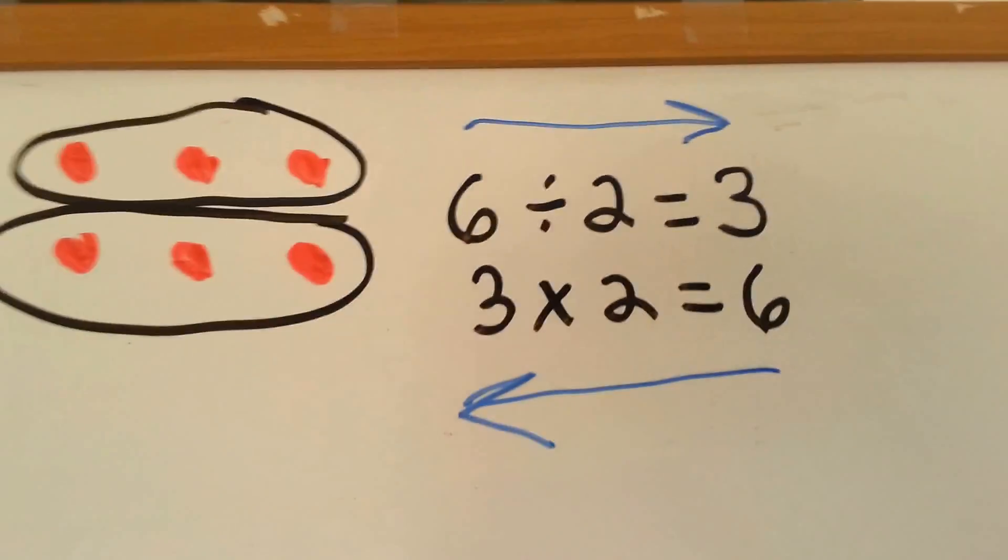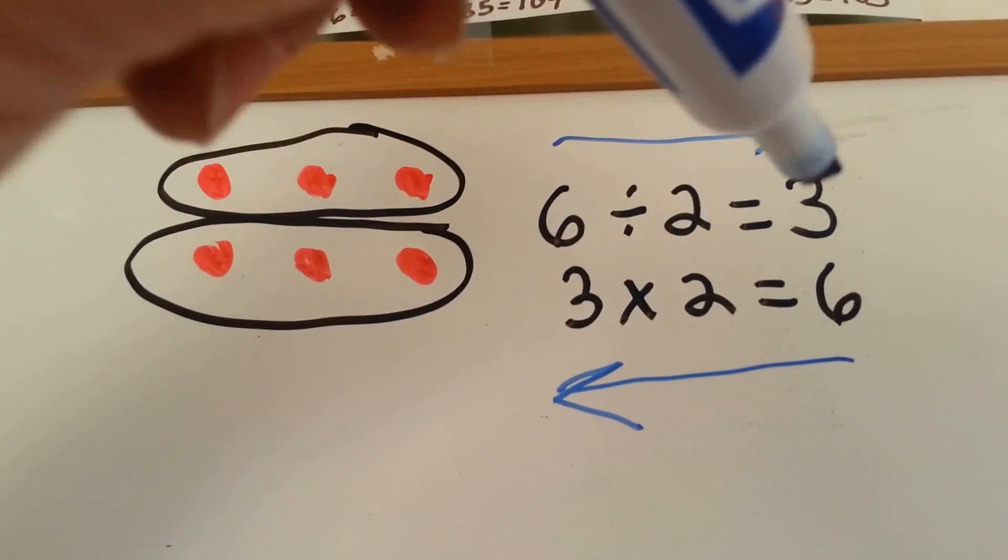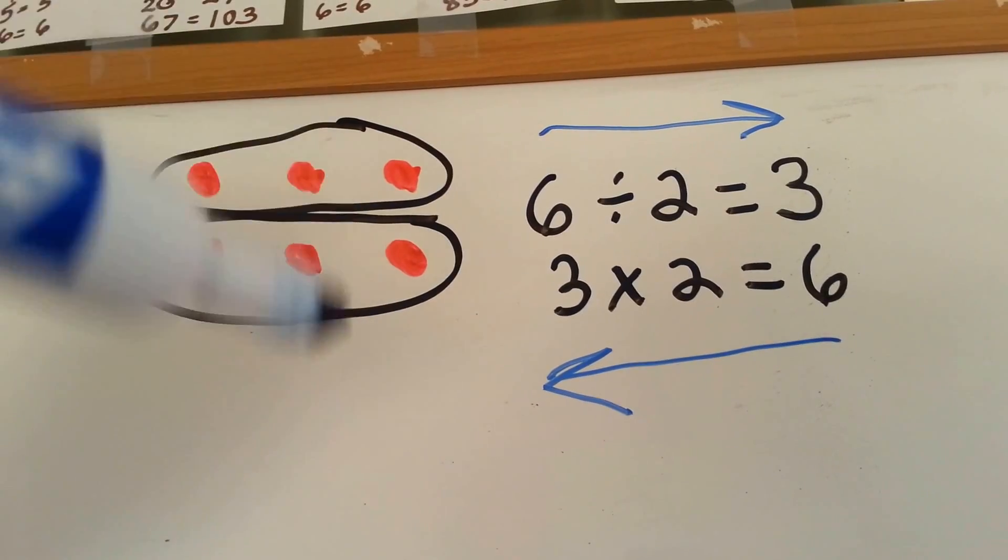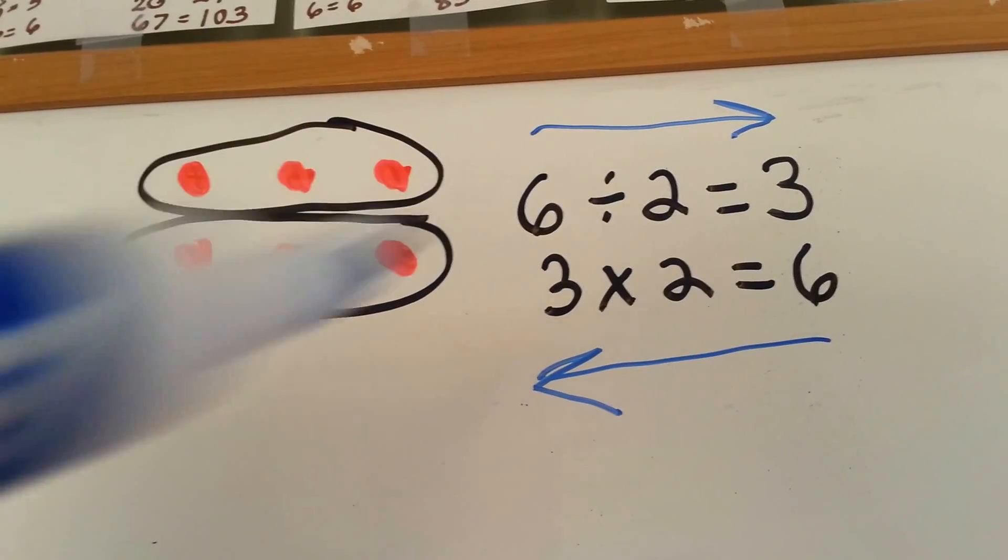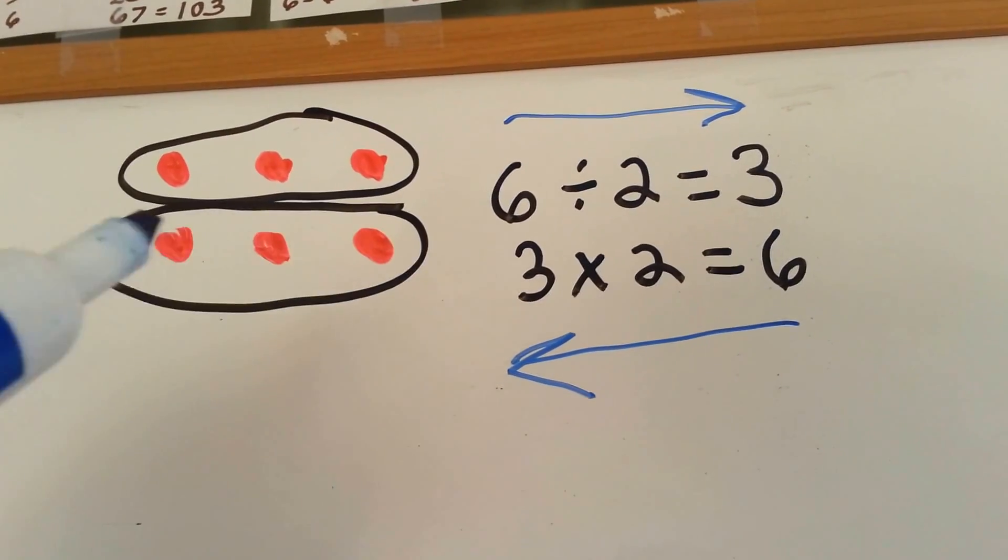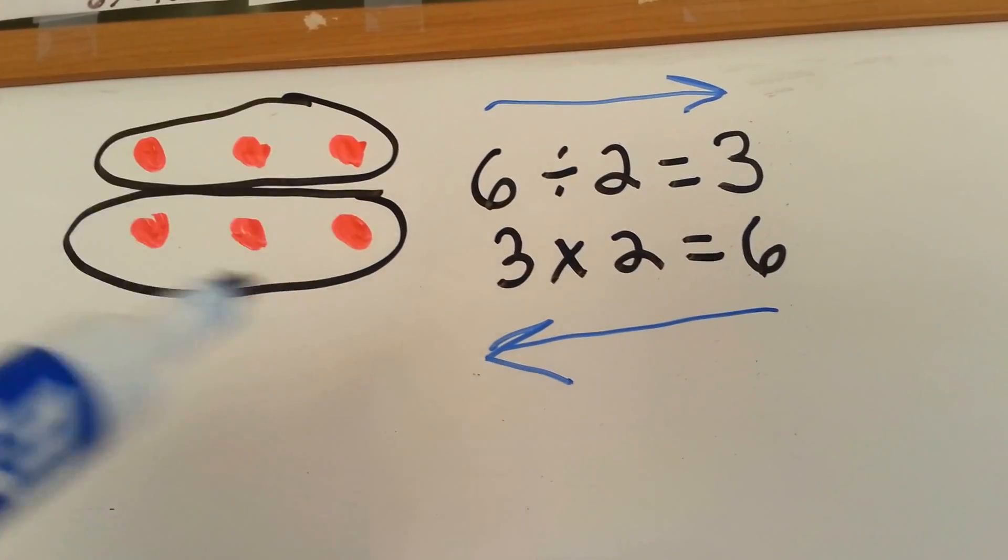So here's what we're doing. 6 divided by 2 equals 3. We have 6 dots divided into 2 groups, and there's 3 in each group. We could also say that we have 3 two times, and that equals a total of 6.